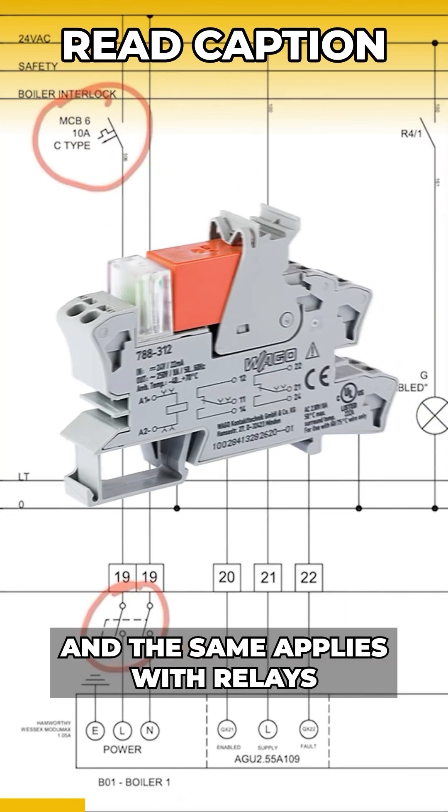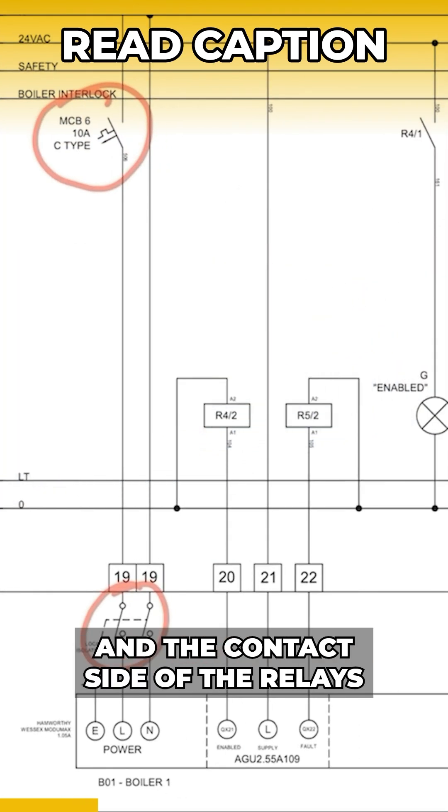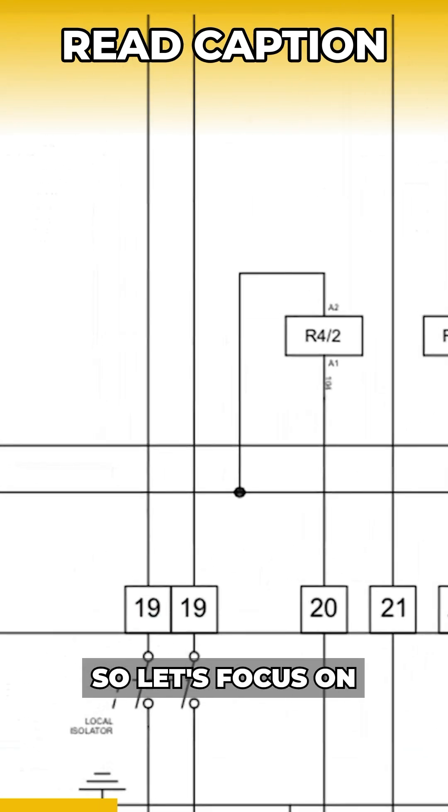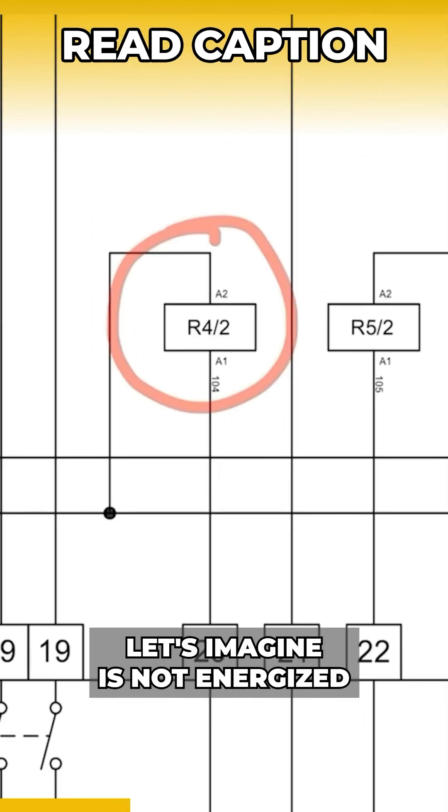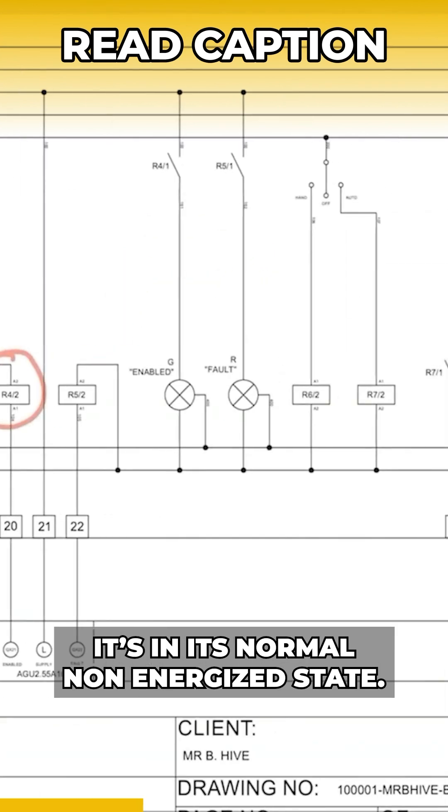And the same applies with relays and the contact side of the relays, or the pole one or pole two. So let's focus on relay four. It's not energized, it's in this normal non-energized state.